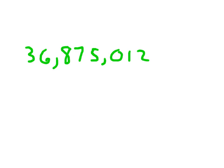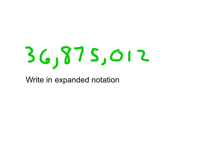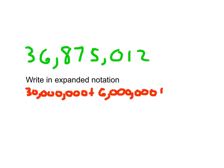Here I'm given a number in standard form and asked to write it in expanded notation. To do so, I need to figure out what each digit is worth. What is the value of that 3? It's 30,000,000 — so I write that first, then a plus sign. That 6 is worth 6,000,000. The 8 is in the 100,000s place, so it is worth 800,000. And we continue from there.